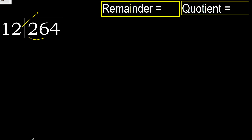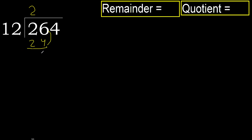But not greater? 12 multiplied by 3 is 36, 36 is greater. 12 multiplied by 2 is 24, 24 is not greater. Ok, 26 minus 24 is 2.